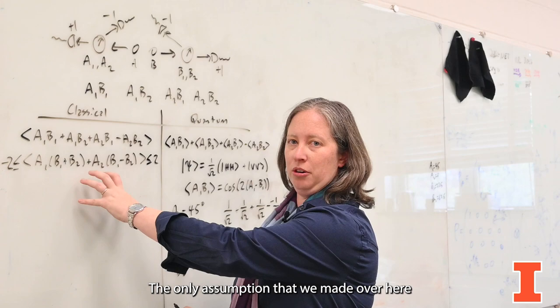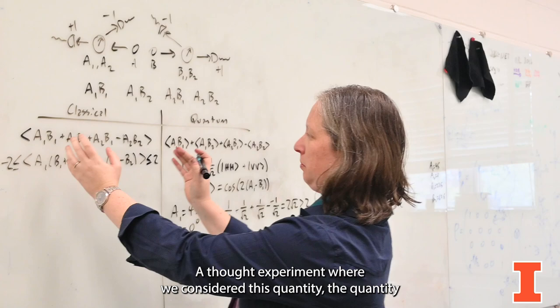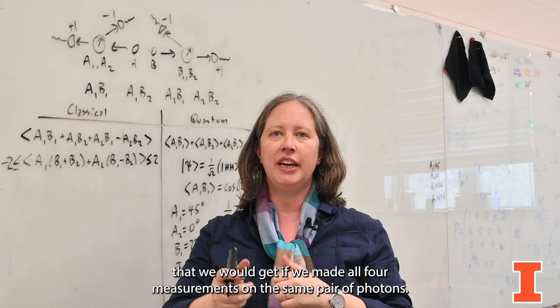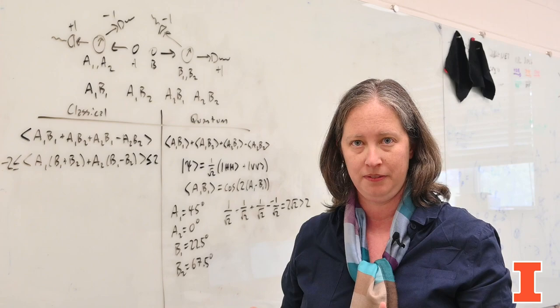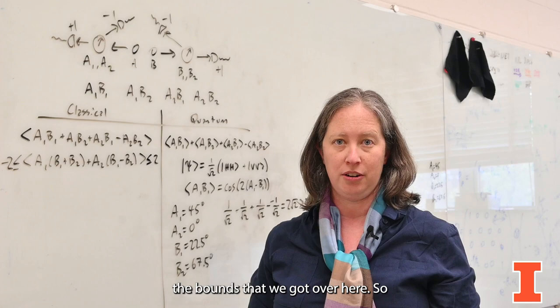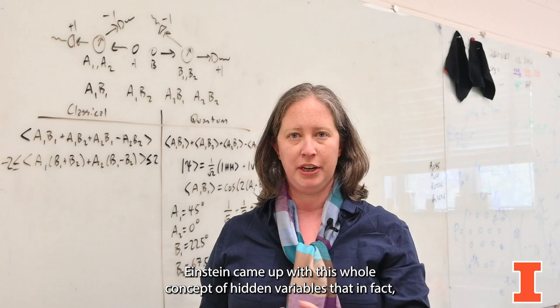The only assumption that we made over here was that we could do a thought experiment, not even a real experiment, a thought experiment where we considered this quantity, the quantity that we would get if we made all four measurements on the same pair of photons. But we saw over here that if we have specific pairs of photons that we make specific simultaneous measurements on, that the quantum mechanical prediction violates the bounds that we got over here.